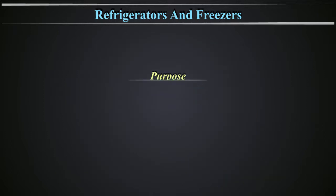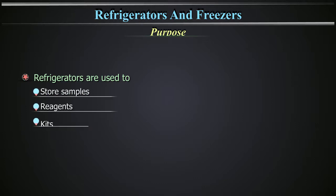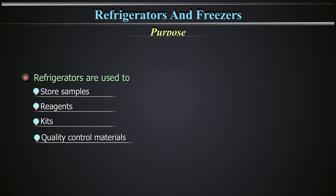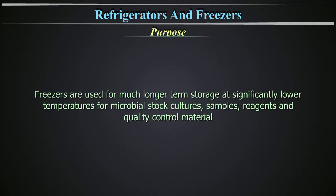Refrigerators are used to store samples, reagents, kits, and quality control materials to ensure shelf life and stability. Freezers are used for much longer term storage at significantly lower temperatures for microbial stock cultures, samples, reagents, and quality control material.